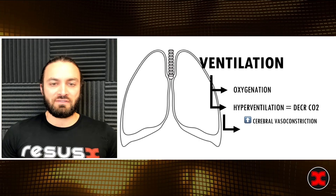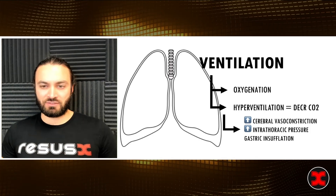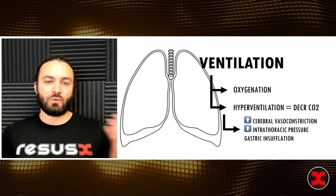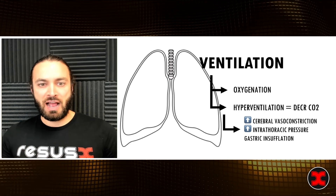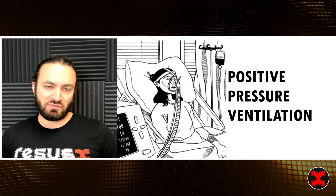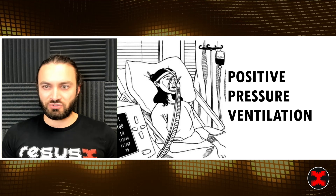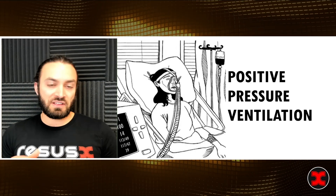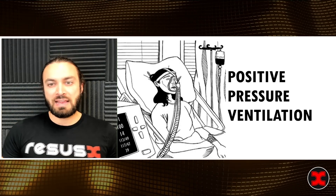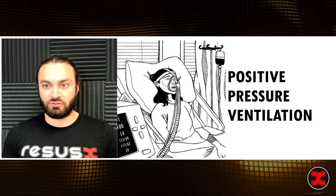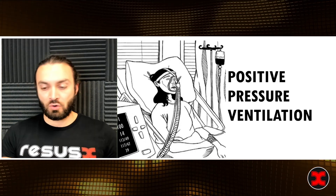Alternatively, hyperventilation — a decrease in CO2 — leads to cerebral vasoconstriction, increased intrathoracic pressure, and gastric insufflation. So there's a balance: we have to consider what our patient needs and how we're managing ventilation to address all these variables. We also need to consider the effect of positive pressure in isolation: positive pressure decreases venous return and subsequently decreases cardiac output, leading to decreased coronary and cerebral blood flow — our two most important factors.